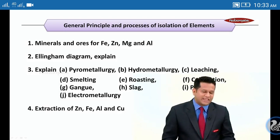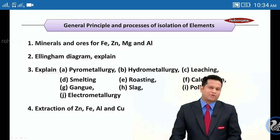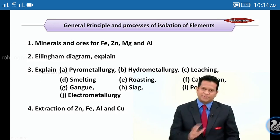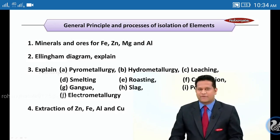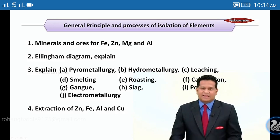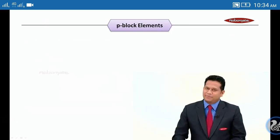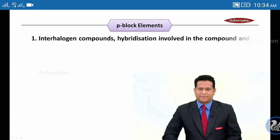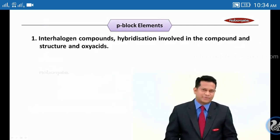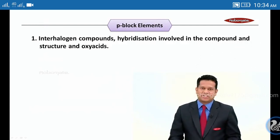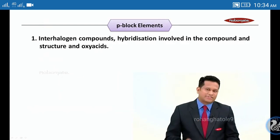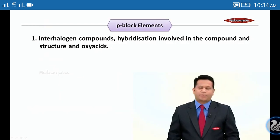Fourth: extraction of zinc, Fe, aluminium, and copper. These are the important questions from General Principles and Process of Isolation of Elements. Let's go ahead with the last chapter — P-Block. The most important topic: inter-halogen compounds, hybridization involved in the compounds, their structures, and the important oxy acids — structures of oxy acids are also very important.